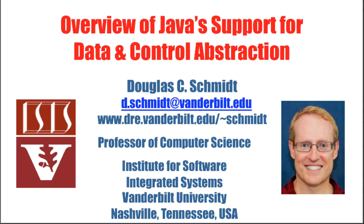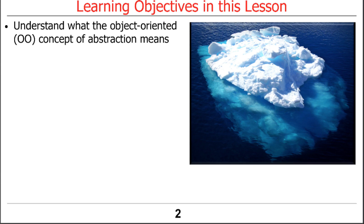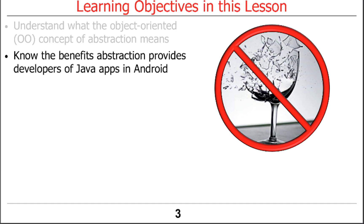Now that we've given a quick overview of the OO parts of Java, let's do a deeper dive in data and control abstraction. What you'll discover with data and control abstraction is that it's really all about hiding you from details that are likely to change. And we'll show you why that's useful.